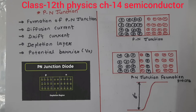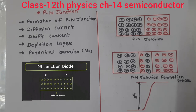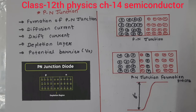In semiconductor devices, the need is fulfilled. We need to control the electron's flow, and in one direction we can control the electron's flow. In your types of semiconductor, we have studied extrinsic semiconductor.